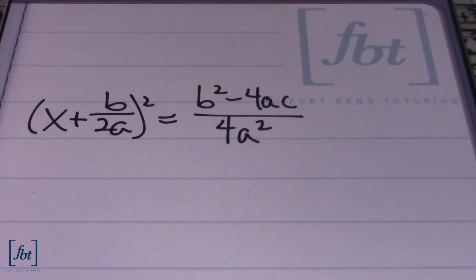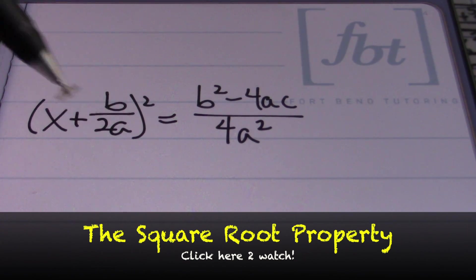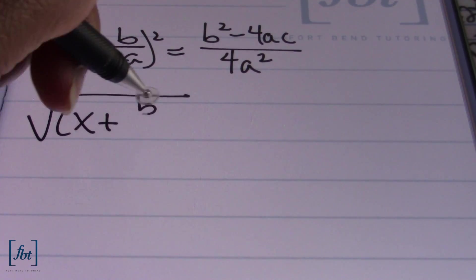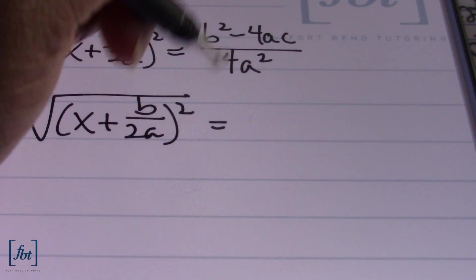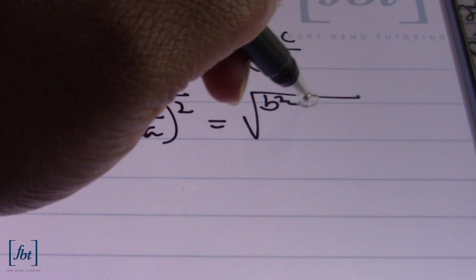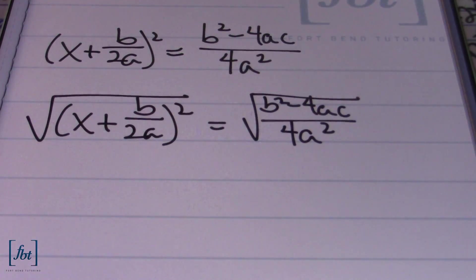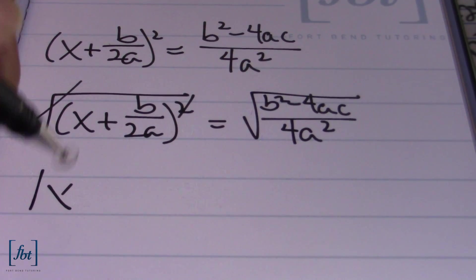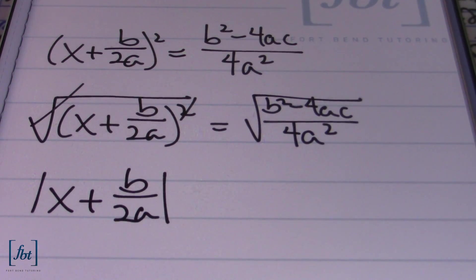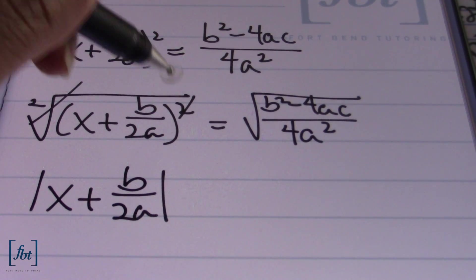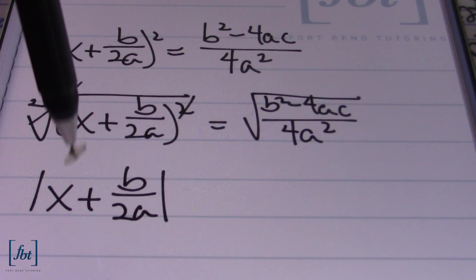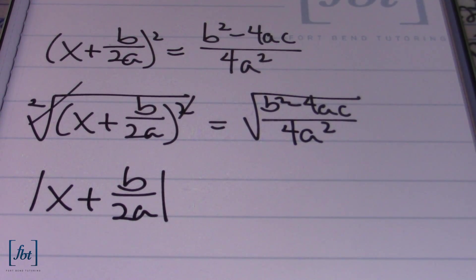At this point we're going to use the square root property. I have this quantity with my variable x being squared, and I need to get x isolated. So I'll take the square root of x plus b over 2a squared, which equals the square root of b squared minus 4ac all over 4a squared. The square root and the square cancel out. However, because we have to guarantee that our result will be positive, this gives us the absolute value of x plus b over 2a. When you're taking the square root of any value, you must guarantee the principal root — the positive root.